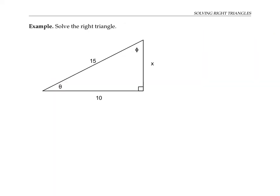In this next example, we don't know any of the angles except for the right angle, but we know two of the side lengths. To find the unknown angle theta, we can use the fact that cosine theta is adjacent over hypotenuse, so that's 10 over 15.